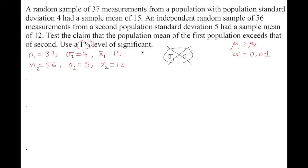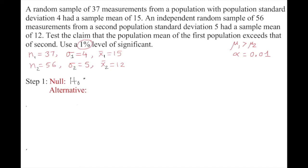Let's set up the hypothesis test. The first step is to write the null and alternative hypotheses. The null hypothesis H₀ is: population mean 1 minus population mean 2 equals 0, meaning we assume they are equal.